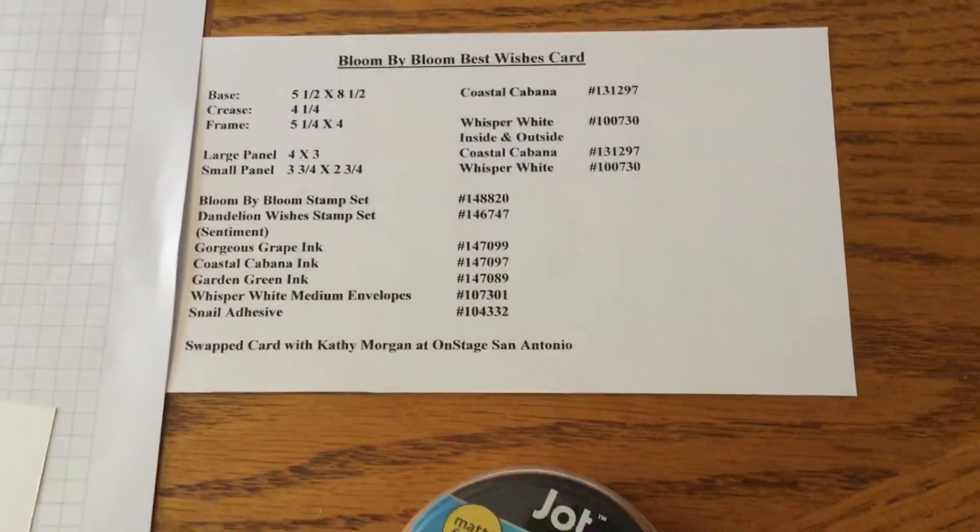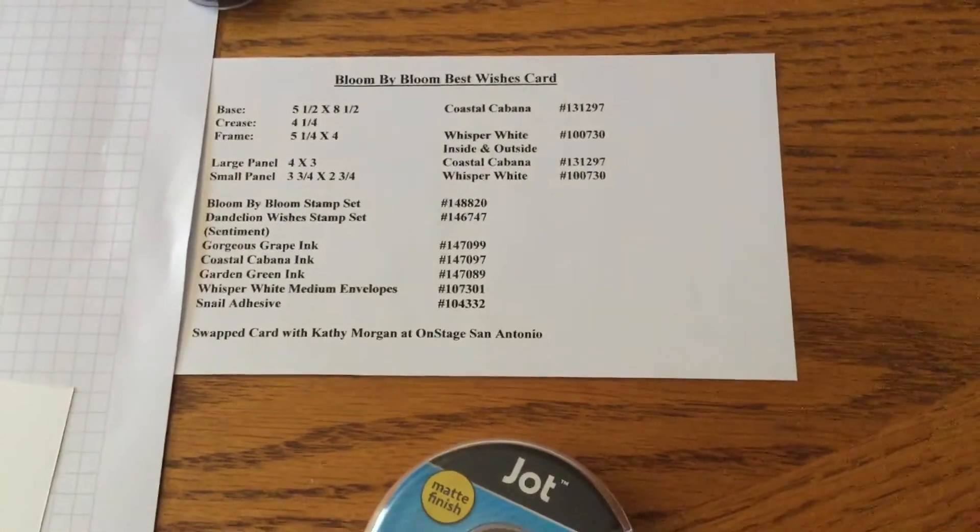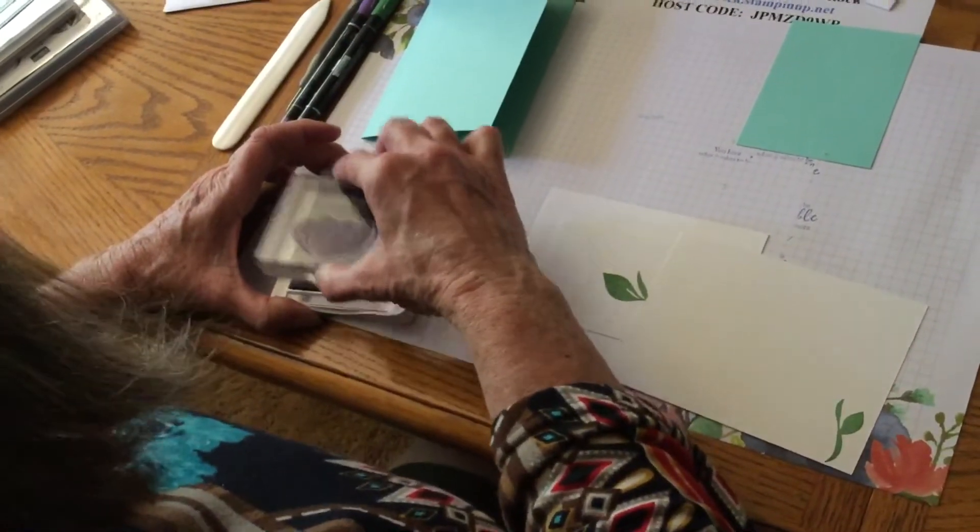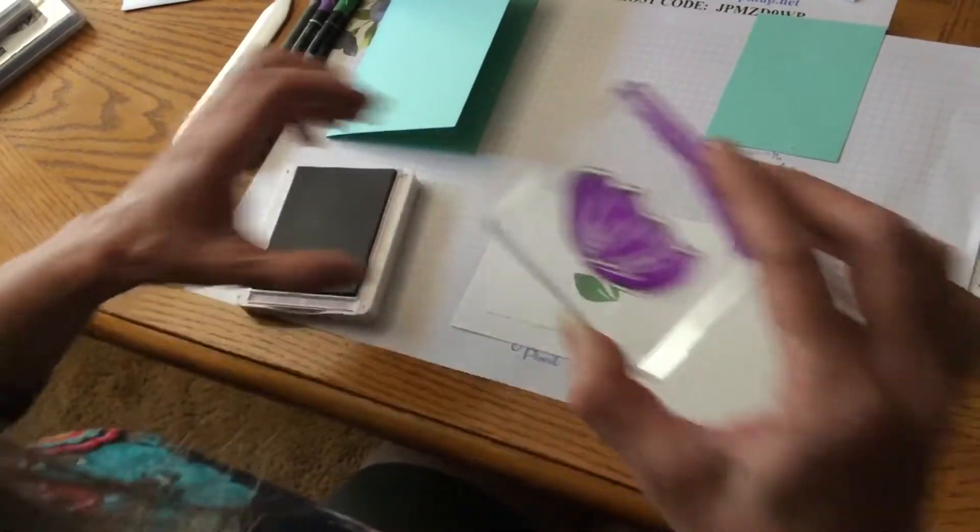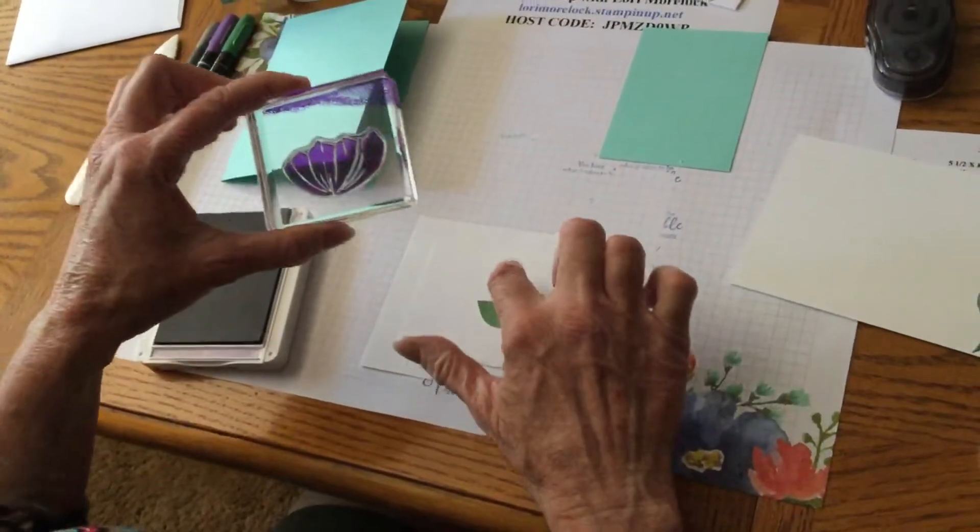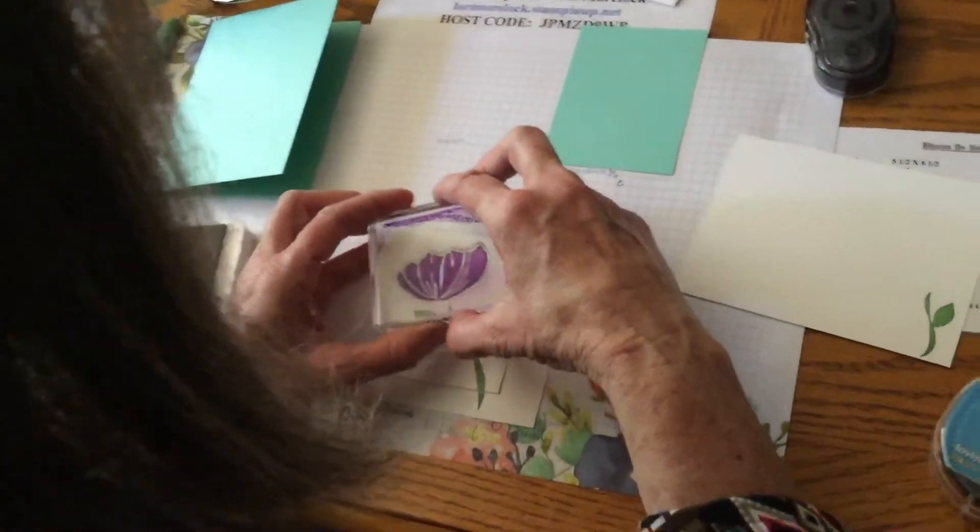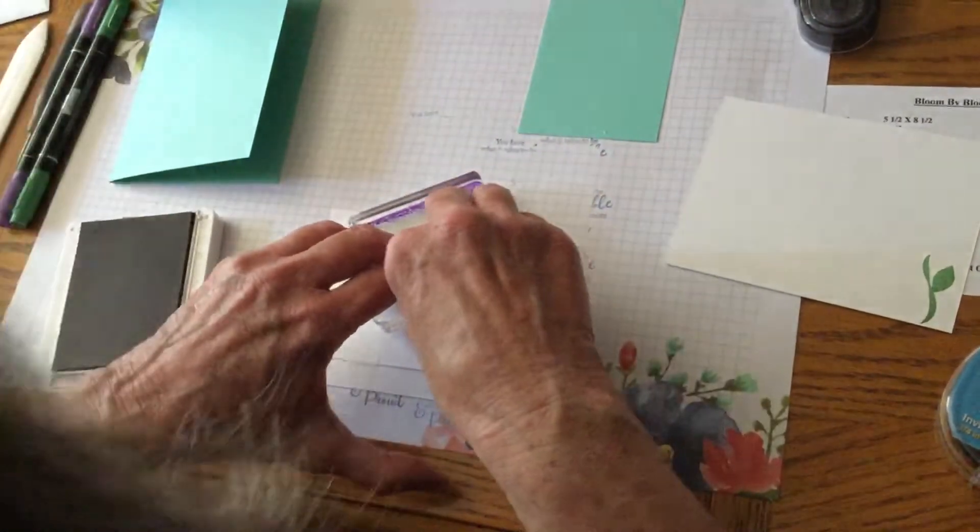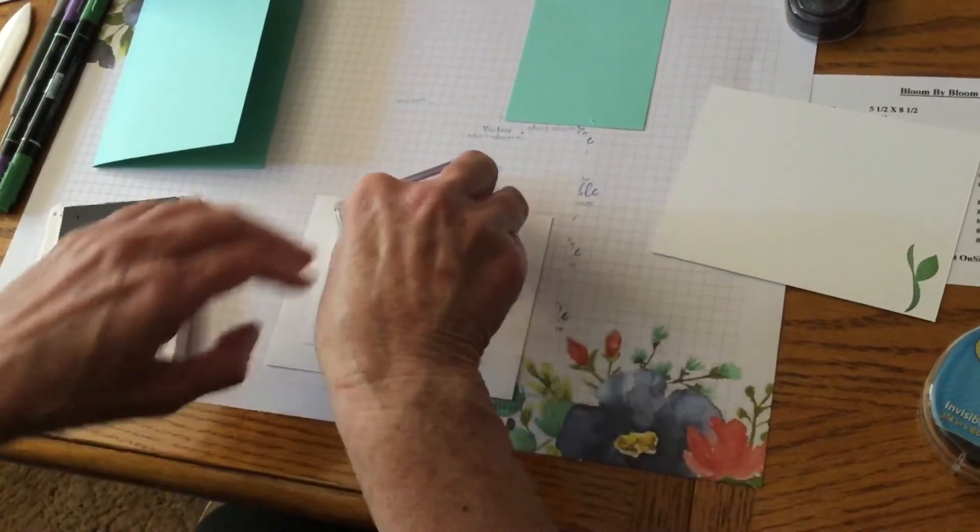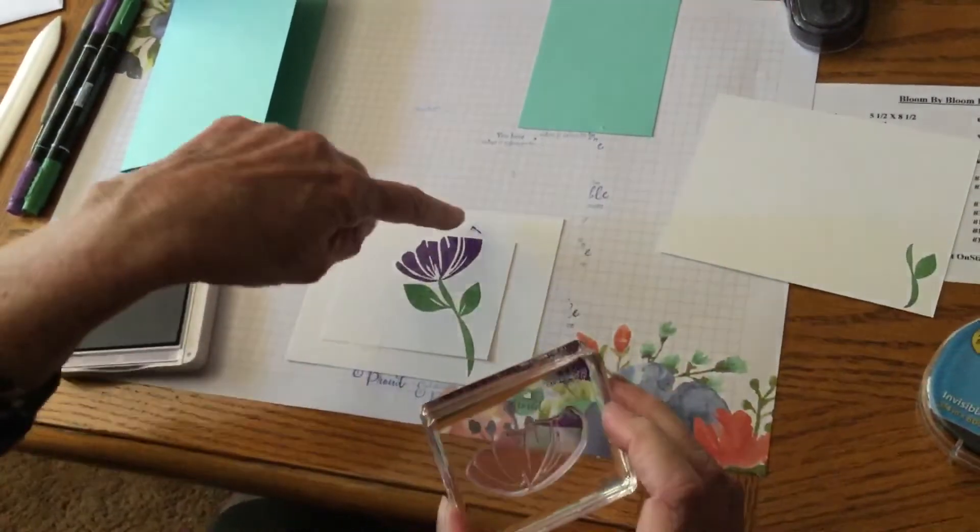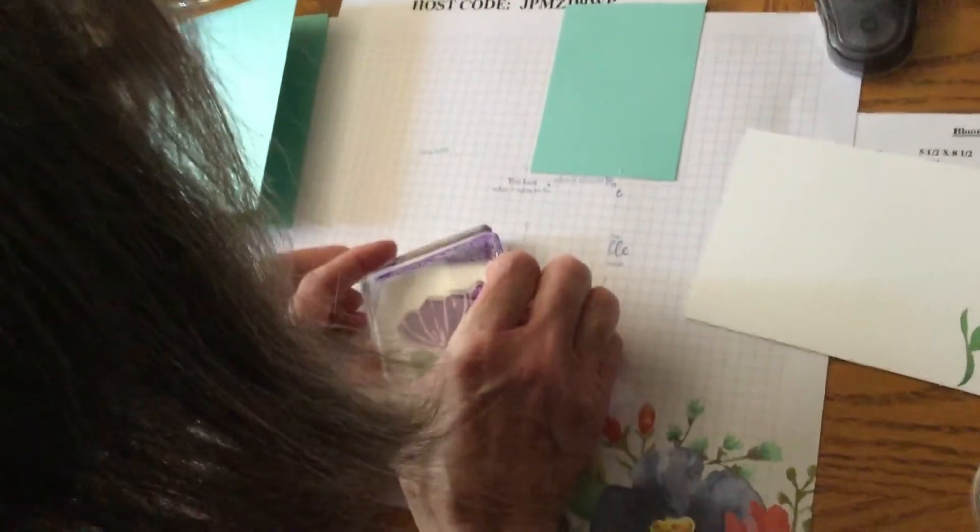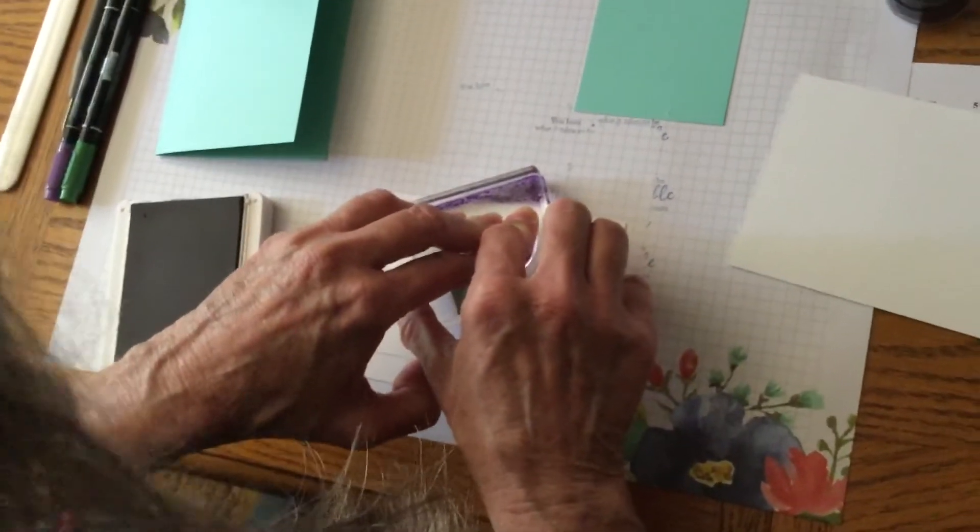Next, we're going to use our Gorgeous Grape, which is still one of my favorite inks. Everybody at class really enjoyed it. In fact, several people even ordered the ink. So now we're going to use our big flower, and we're going to line it up right over the edge here. Press down good. And see how it didn't come all the way? If you'll just sit there and press back down, these photopolymer inks really do line up perfectly.